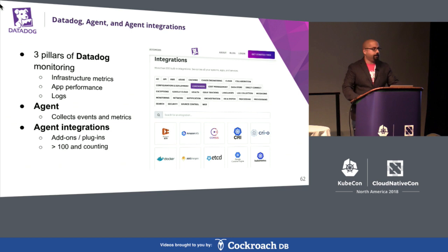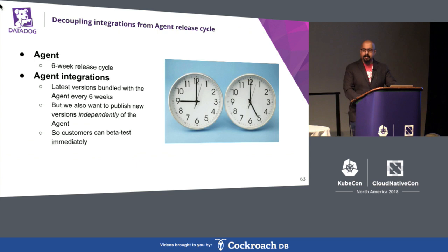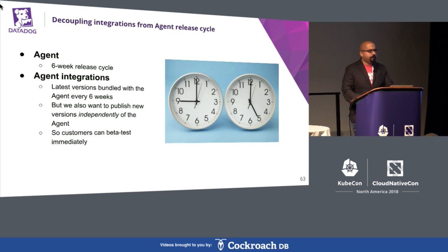The Datadog agent is software that runs on your hosts. It collects events and metrics and sends them to Datadog where you can analyze monitoring and performance data. The agent integrations are plugins that collect metrics from services running on your infrastructure — there are more than 100 of them installed out of the box. The agent releases software on a six-week cycle with the latest integration versions bundled in, but we also wanted to publish new integrations independently so customers can beta test new features and bug fixes before the next stable agent release.